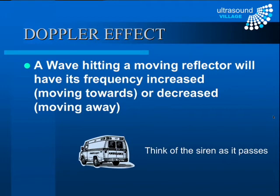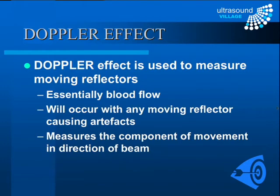Moving on, we now discuss the Doppler effect — how we detect flow and movement with ultrasound. A wave that hits a moving reflector will have its frequency either increased or decreased depending on whether that reflector is moving towards or away from the source, like an ambulance siren changing pitch as it passes. The machine measures this change in frequency resulting from the Doppler effect and calculates the movement of those reflecting surfaces.